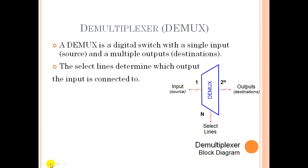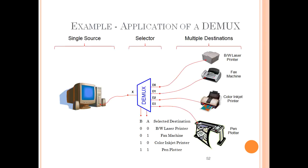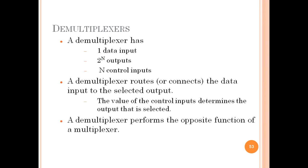Where we apply a mux, we will of course apply the demux on the other side. The select lines determine which output the input is connected to. Out of one input, the particular output to which the input is routed is selected by the select lines. The application of demux is just the opposite of the mux.